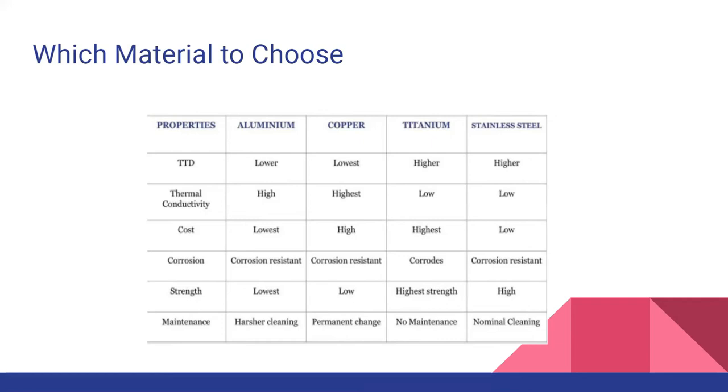Aluminum is the lowest cost whereas titanium is highly expensive. If we look at corrosion, except titanium, none of the other three metal corrodes. If we look at the strength, aluminum has the least strength whereas titanium has the highest strength. Titanium requires no maintenance whereas aluminum, copper and stainless steel require some amount of maintenance with copper being on the highest side. If we compare all these materials, we will come to know that it's not only TTD but many other factors that we need to take in mind before we decide the material. Based on these observations, we can see that aluminum and copper can be used and are most appropriate metals to be used as a heat exchanger.